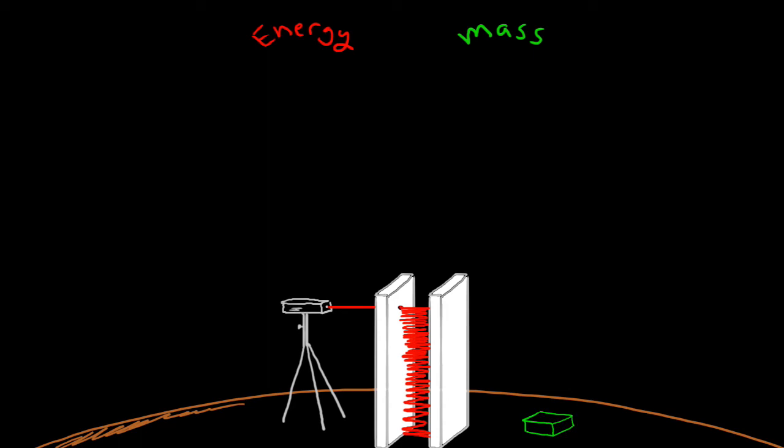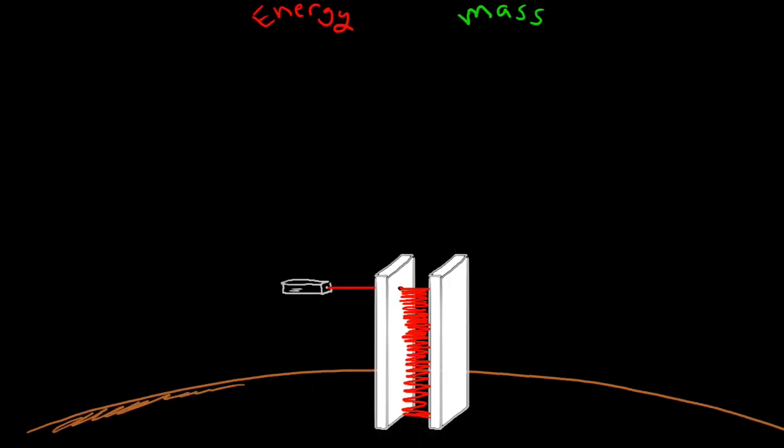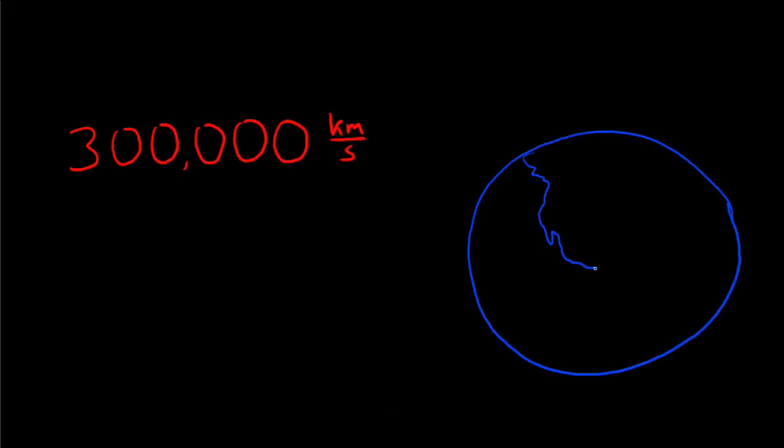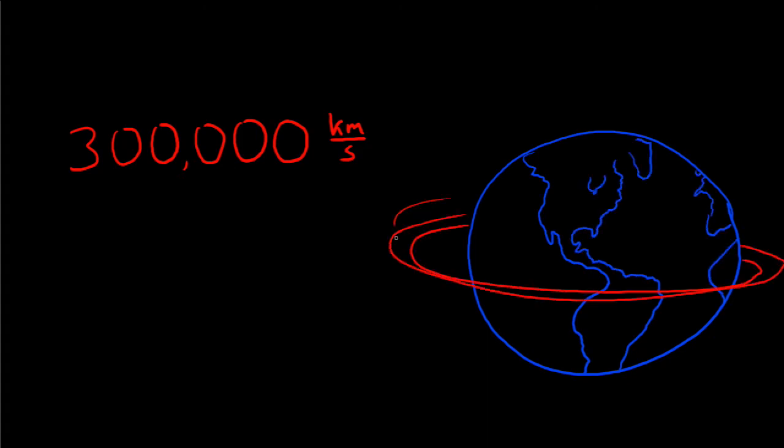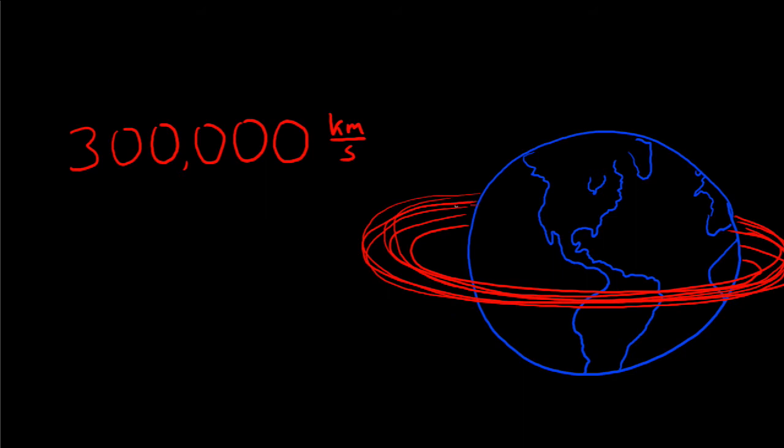The only reason we don't normally notice this is because light travels so fast, which is some 300,000 kilometers per second. That's not per hour, that's per second. In one second, it travels 300,000 kilometers, which is around the world seven and a half times.